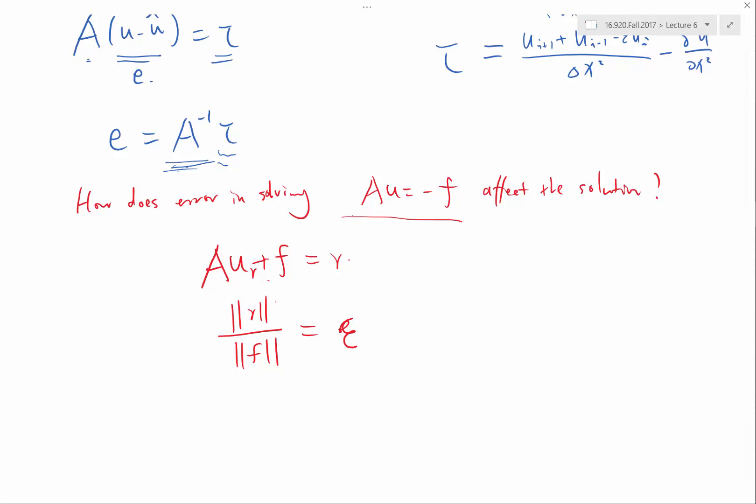So the question is, how does ur minus u, the magnitude of ur minus u divided by the magnitude u depend on epsilon?